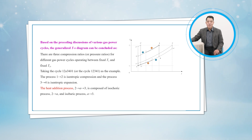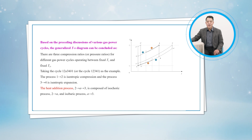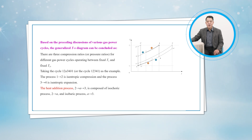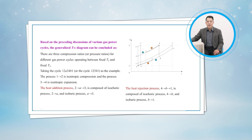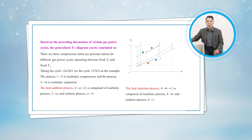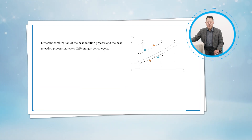The heat addition process from state 2 to state A to state 3 in figure 10-38 is composed of the isochoric process from state 2 to state A, and the isobaric process from state A to state 3. The heat rejection process from state 4 to state B to state 1 is composed of the isochoric process from state 4 to state B, and the isobaric process from state B to state 1.